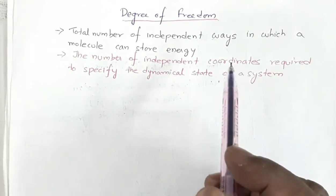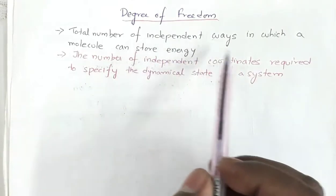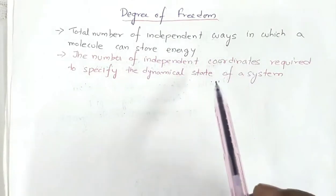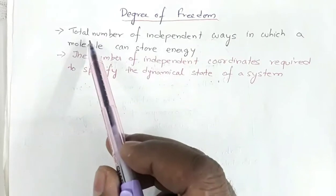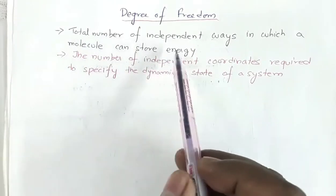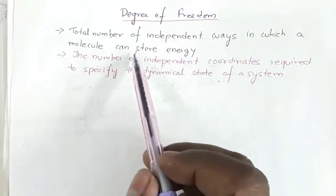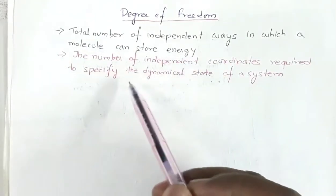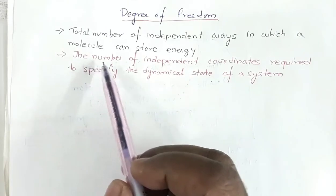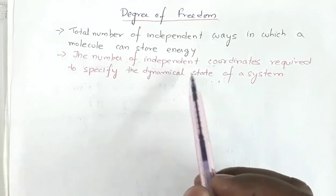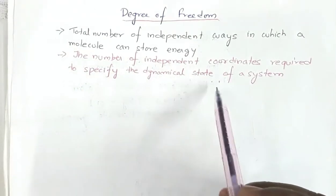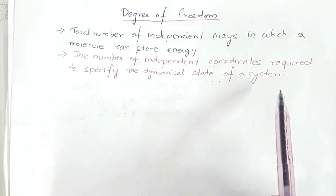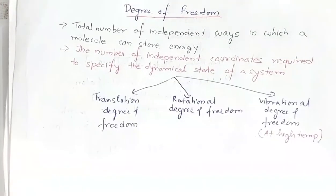That is the concept of degree of freedom. There are two standard ways in which degree of freedom is defined: first, the total number of independent ways in which a molecule can store energy; or it can also be defined as the number of independent coordinates required to specify the dynamical state of the system.